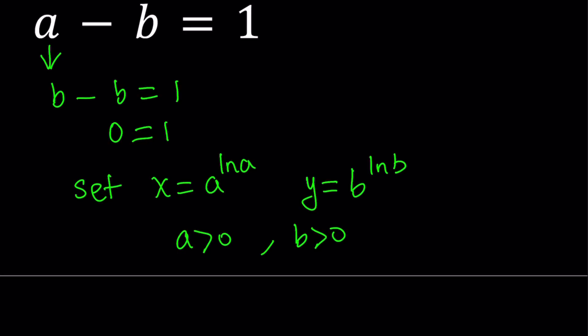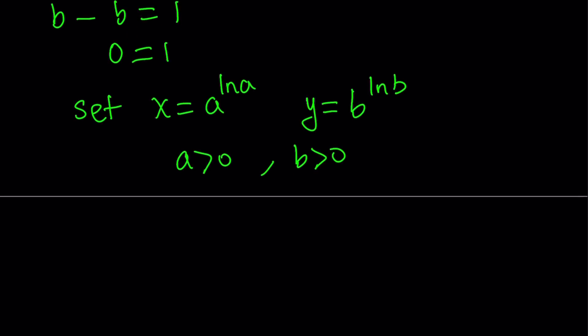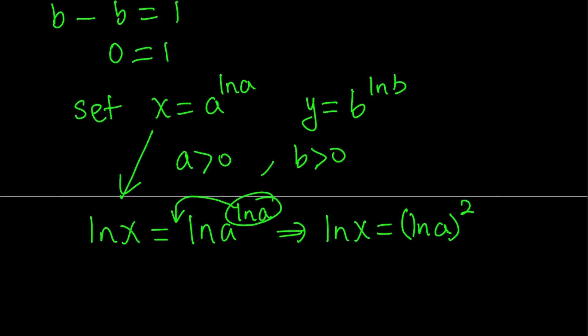Alright, let's see what we can do with this. Since we have a variable in the exponent, it makes sense if we ln both sides. So ln x from here is going to be ln a to the power ln a. And this implies ln x equals, this is a power, so you can move it to the front. It becomes ln a times ln a, which can be written as ln a squared. And by the same token, ln y is going to be ln b to the power ln b. And then from here, ln y can be written as ln b quantity squared.